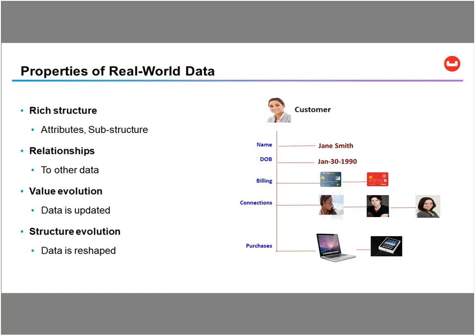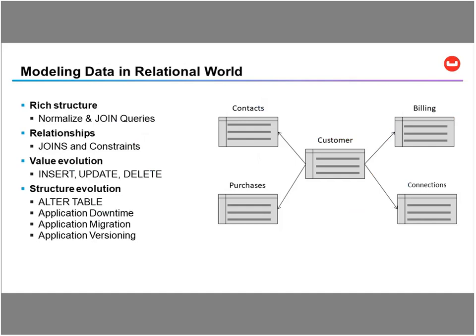In any real-world application, you have data that is rich in structure — you have attributes and nested structures. You have attributes with relationships, like customer connections and friends — one-to-many and many-to-many relationships. Your data will evolve; you'll be updating and deleting data periodically, and even the schema changes over time. In a fast-moving world, you can start with one structure, but by the time you're done developing and ready to deploy, sometimes even the structure changes, and you have to react quickly.